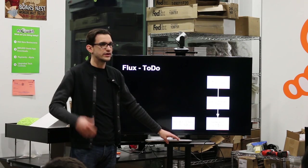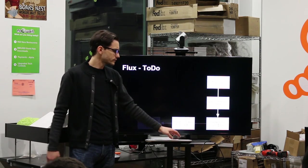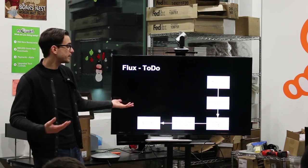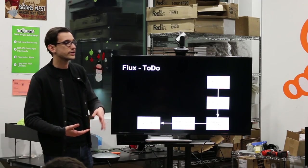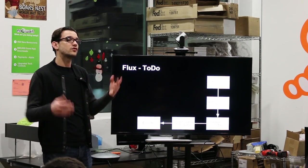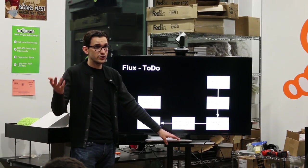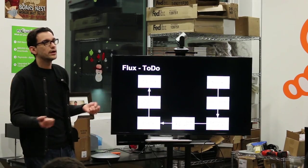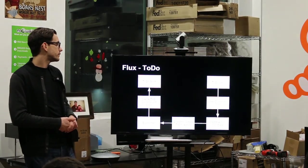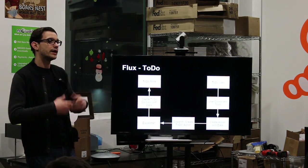So obviously this needs to be sent to the dispatcher and the dispatcher receives it. So now the dispatcher has this create to do action. It says, okay, any stores that are subscribed to this type of action, I got a new one. You need to update yourself. So the to do store gets the create the new, the create to do action.